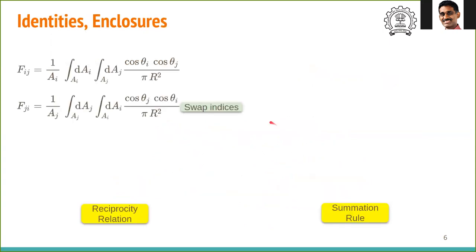Computing the view factor for arbitrary surfaces is not part of this course, but we will be using some simple relationships. Some identities we can use for view factors are as follows. Consider the view factor definition for F_ij: F_ij equals 1 over A_i times the double integral of dA_i dA_j cos theta_i cos theta_j divided by R squared.